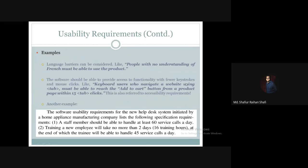For example, users who navigate a website using the Tab key must be able to reach the 'Add to Cart' button from a product page within 15 tab clicks. This is a specific usability requirement for an e-commerce website targeting keyboard-only navigation users.